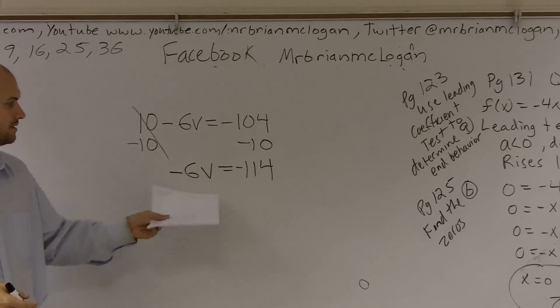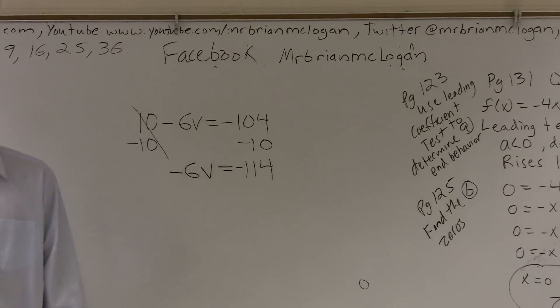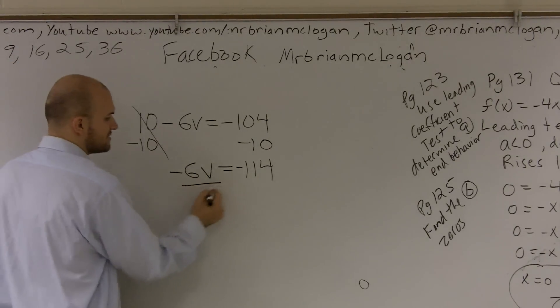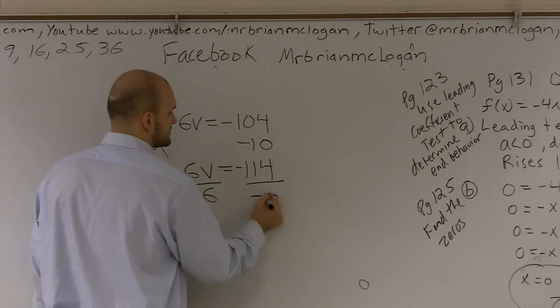Then, to undo this problem, what I need to do is divide by negative 6. Since I'm multiplying v times negative 6, I now need to undo that by dividing by negative 6.